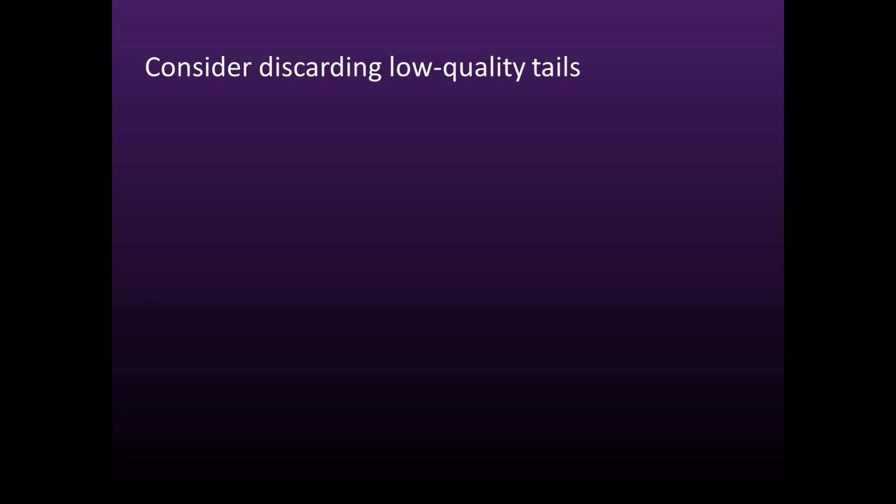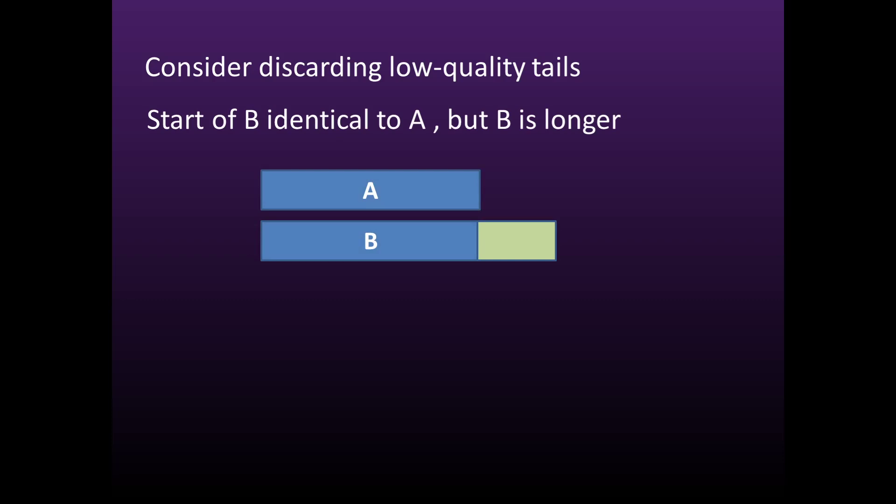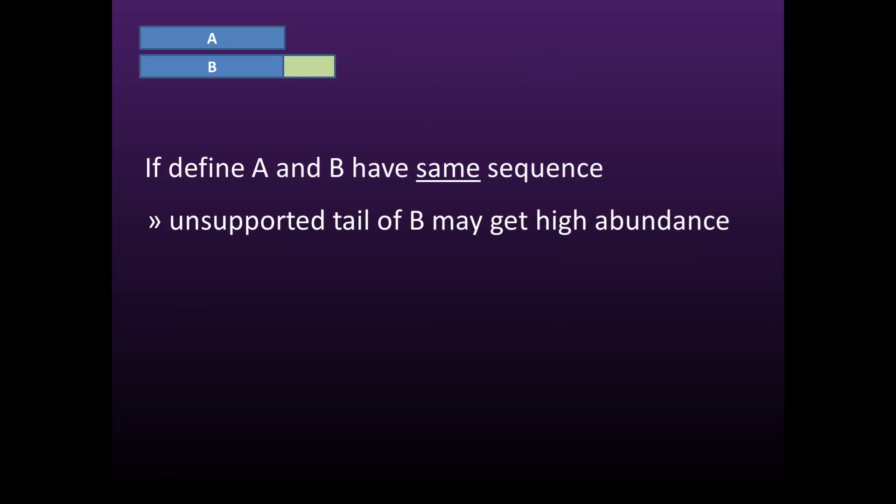To see why this rule is important, consider what happens when low-quality ends are trimmed from the reads, which is a popular strategy in the literature. Consider two reads A and B, which have been truncated to different lengths, and are identical over the full length of the shorter sequence. Should we consider A and B to have the same sequence? If we answer yes, and say that A and B have the same sequence, then the tail of B may get a high abundance, even if it's been observed only once.